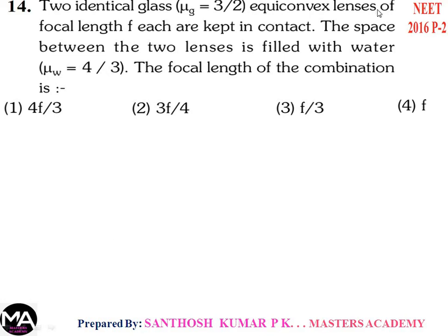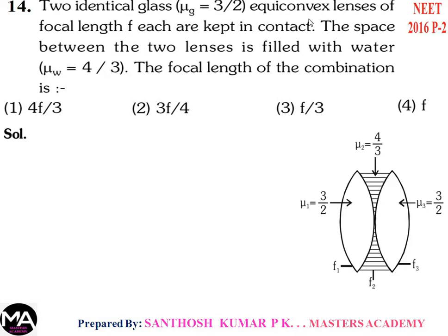Question 14: Two identical glass equiconvex lenses of focal length f each are kept in contact. The space between the two lenses is filled with water of refractive index 4/3. Find the focal length of the combination. Solution: The two identical equiconvex lenses have focal lengths f1 and f3 with refractive index 3/2. They are kept in contact and the region is filled with water of refractive index 4/3, which forms a concave lens f2.